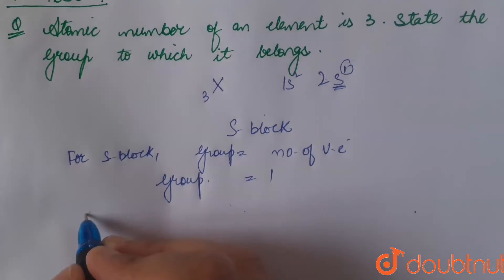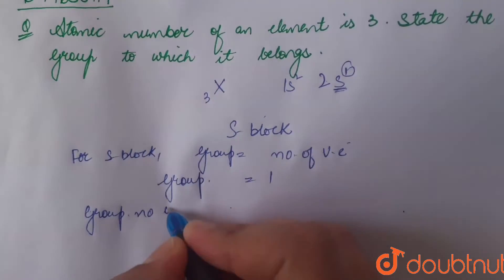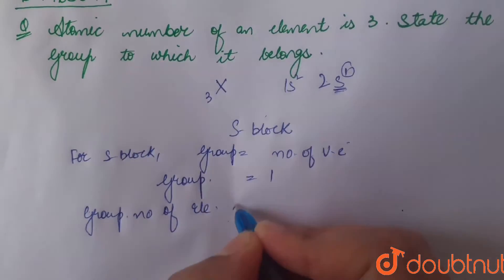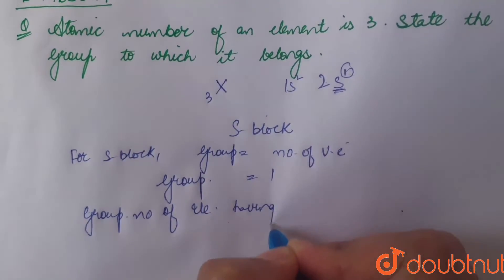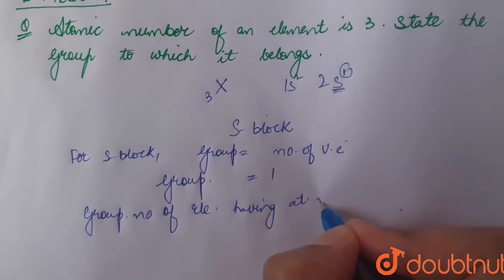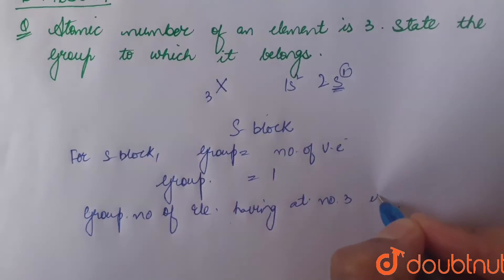Hence, group number of element having atomic number 3 is 1.